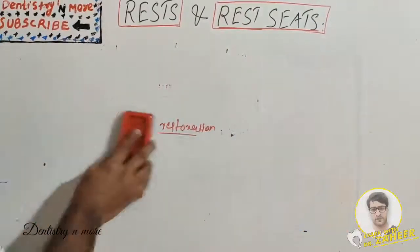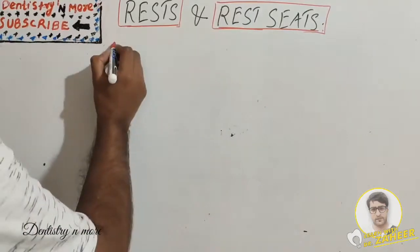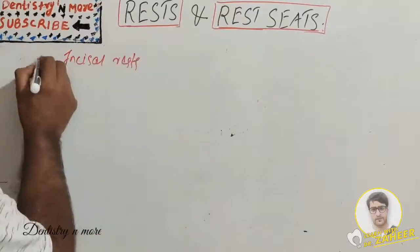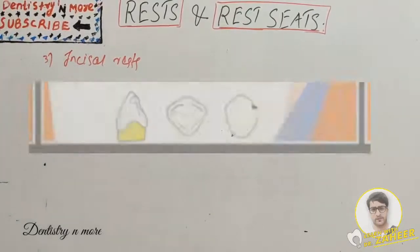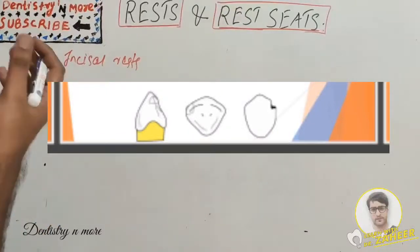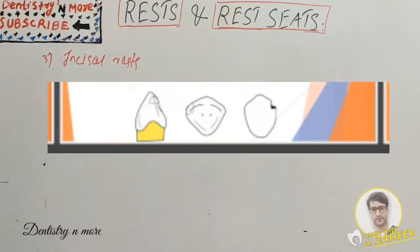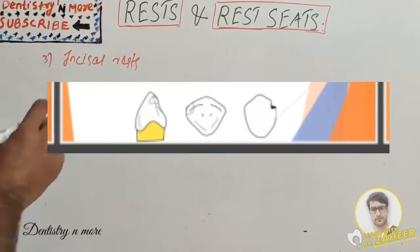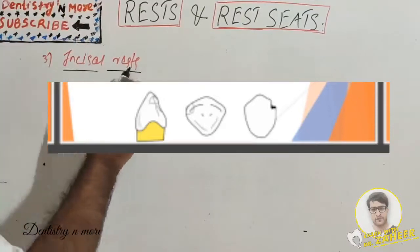Incisal rests are placed at the incisal angles of anterior teeth. They are less desirable than lingual rests for anterior teeth; nevertheless, they may be used successfully if the abutment is sound and cast restorations are not indicated. The incisal rest may be used on a canine abutment in either arch, but the cingulum rest can be used only on the upper arch.